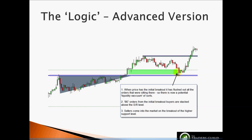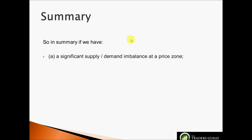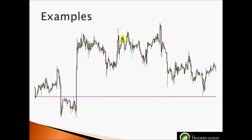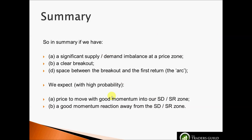A novice trader will be scared of price moving fast against them, but it's important to realise this is something to embrace — we fully expect it. Summary of what we've covered: we have a significant supply-demand imbalance via a strong breakout, space between the breakout and first return (the arc), we then expect with high probability that price moves with good momentum when it gets close to our SD/SR zone, and then a strong reaction away from our SD/SR zone. The order flow dynamics explain why this works in terms of market participants and the order flows they represent.